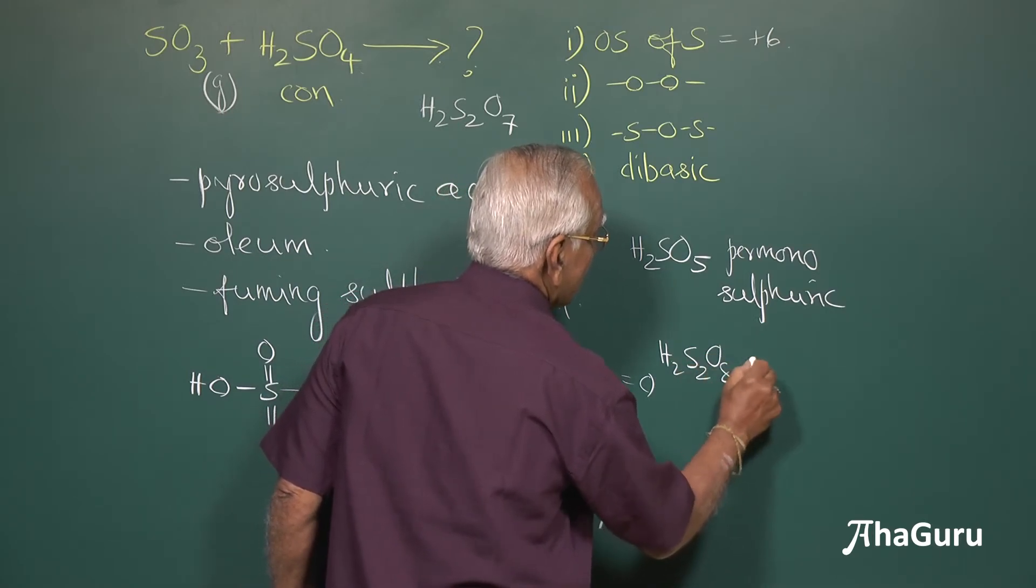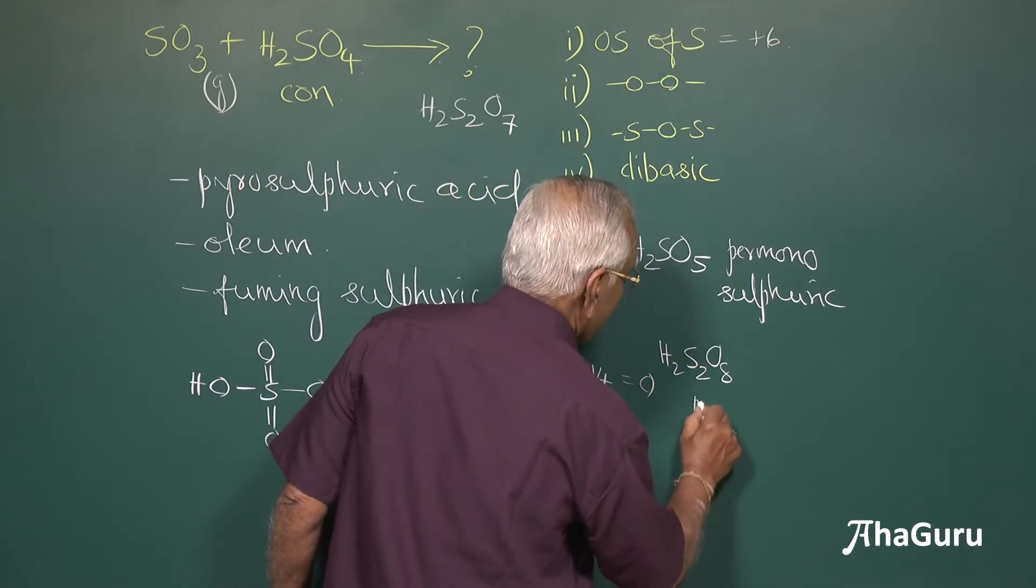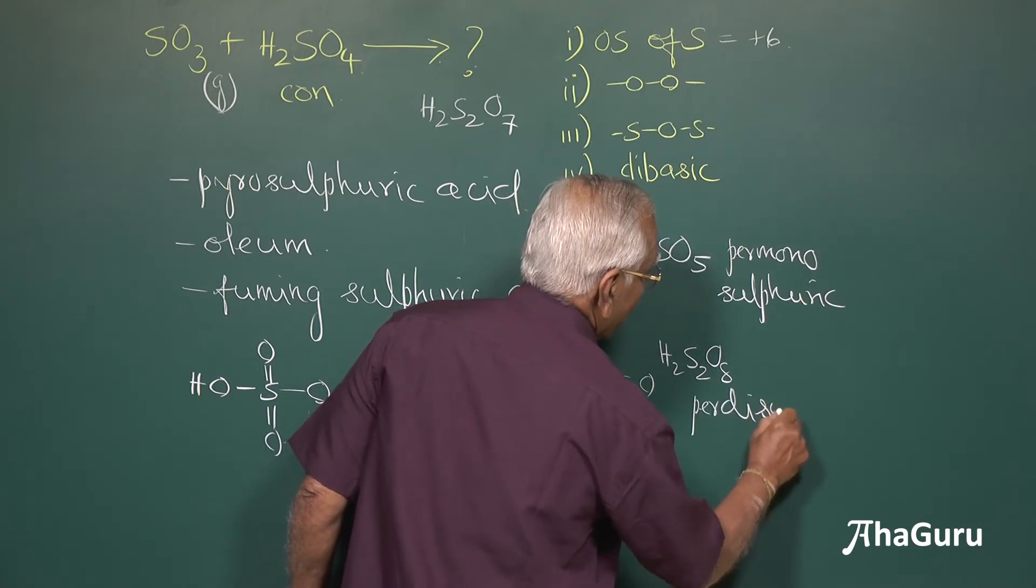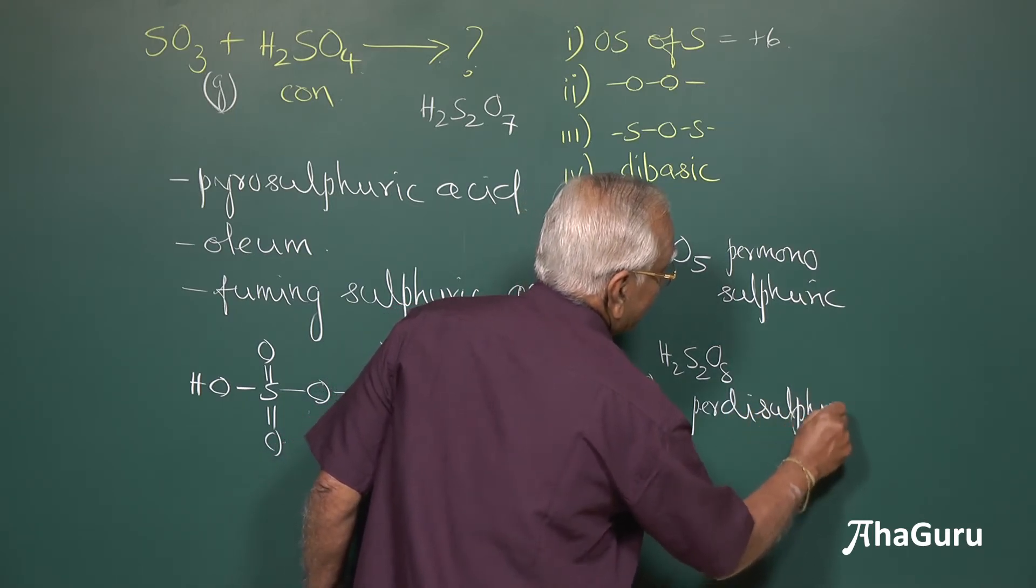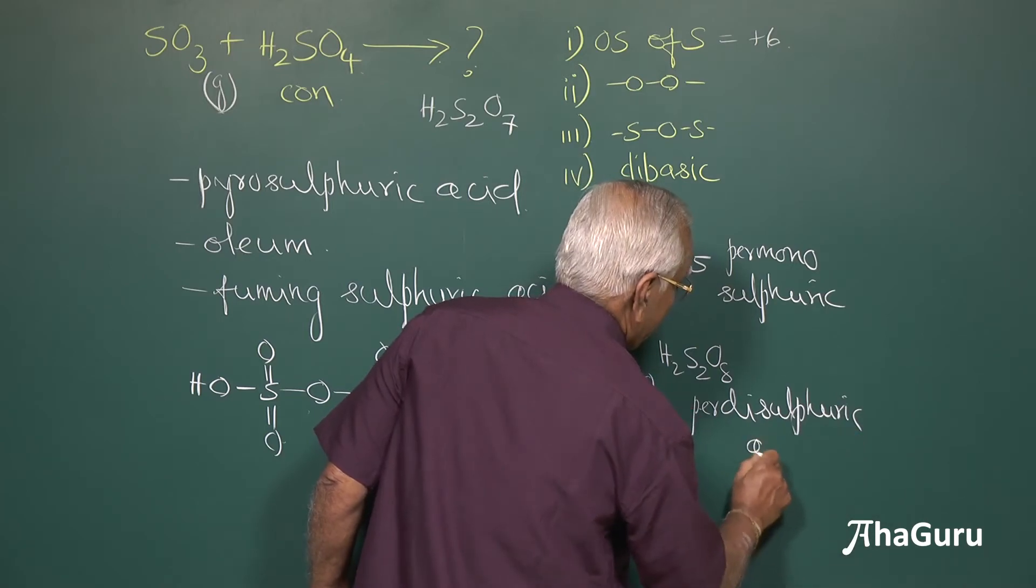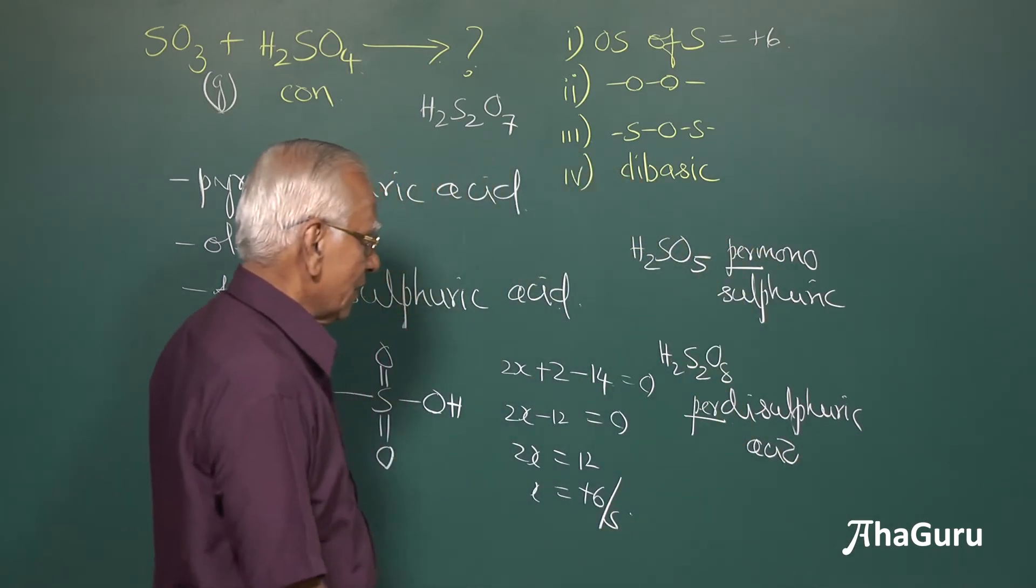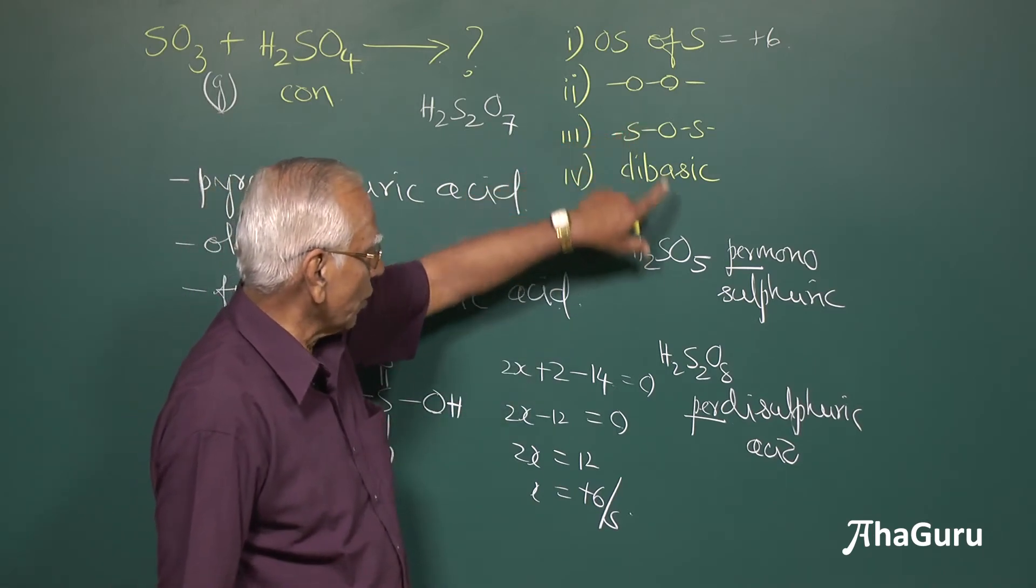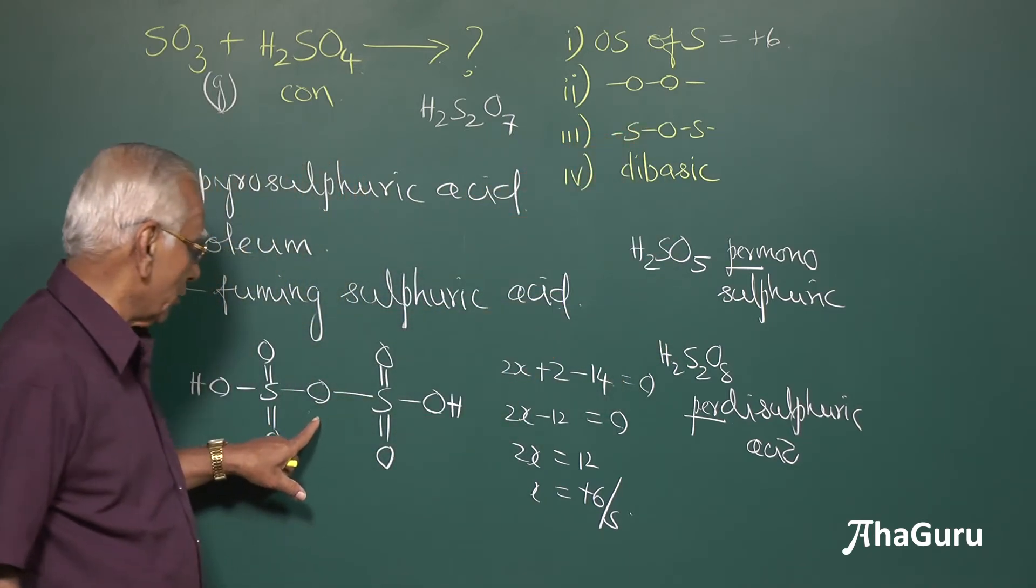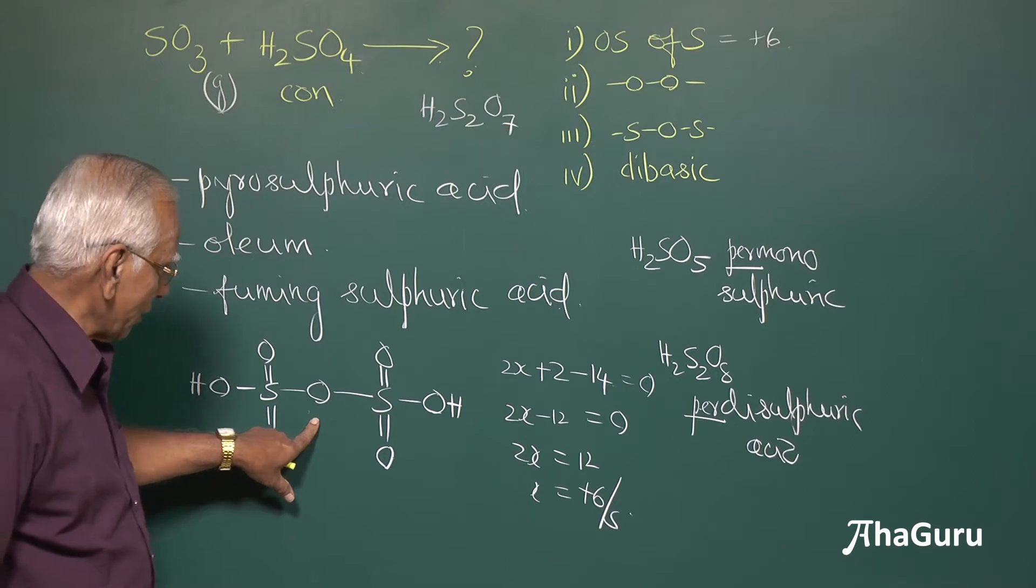H2S2O8, this is an example of paradisulfuric acid, paradisulfuric acid, paradisulfuric acid. So, both of them are called peracids, peracid means it has got oxygen-oxygen linkage, whereas this particular compound acid is not a peroxy acid.